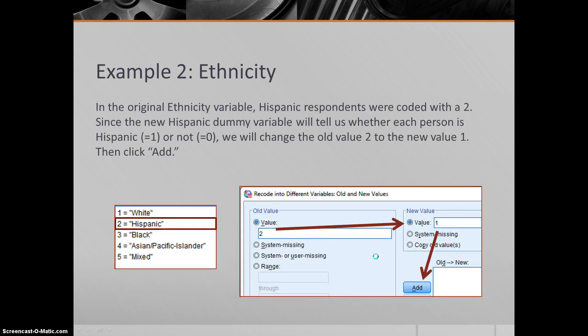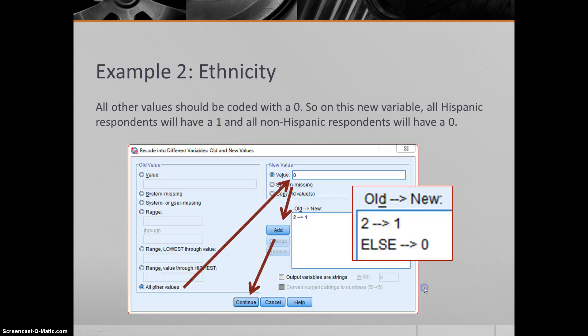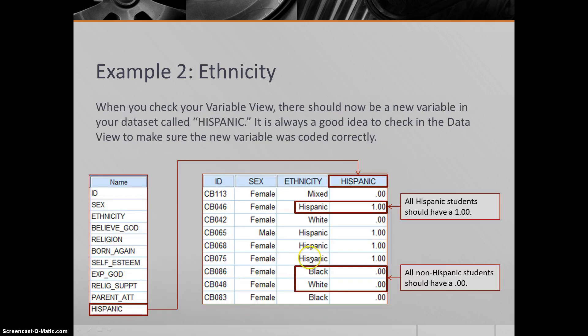When you click change, it comes up going ethnicity arrow Hispanic. Then we click on old and new values to tell the computer what we're changing into what. As you recall, Hispanics had the number two. So if the old value is two, we're going to tell the computer to change the value to one in the new variable. So if they had a two, they get a one, and we click add, and it comes up like this: 2 becomes 1. Everything else becomes zero. So this Hispanic variable is just supposed to tell the computer whether or not someone is Hispanic. Now it's dichotomous—you either are or you are not. If you are, you used to have a two, now you get a one. If you are not, all other values are zero. Add, it's going to come up and look like this: 2 becomes 1, everything else becomes zero. Continue. And when you run that, you actually end up creating a new variable in your data set.